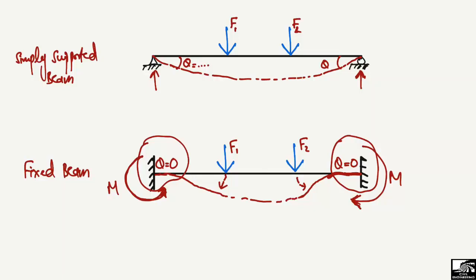So this is the definition of the fixed beam: it will not show any kind of deflection or slope at their respective supports because they are fixed supports. In the simply supported beam, we always have some deflection and some rotation at the ends. This is the main difference between a simply supported beam and a fixed-ended beam. Hope you guys understood — don't forget to subscribe to our channel. Thank you for watching.